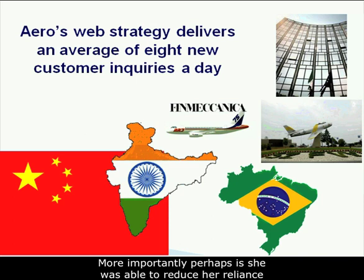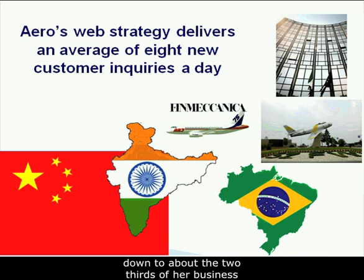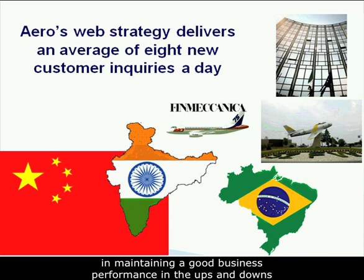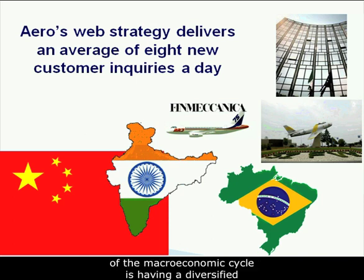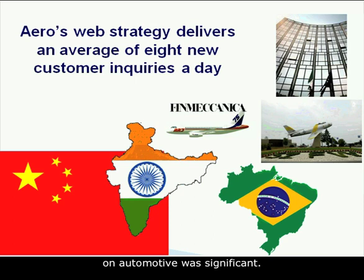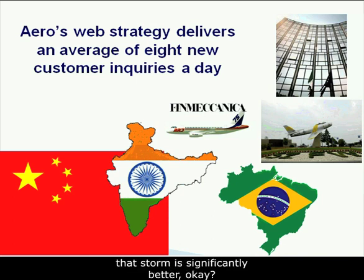More importantly, she was able to reduce her reliance on a single vertical market. She went from virtually a majority of business in defense/NASA down to about two-thirds — still somewhat heavily weighted, but this occurred over the course of just one year. One of the key elements in maintaining good business performance through the macroeconomic cycle is having a diversified business base. Companies in the Midwest that were solely reliant on automotive were significantly impacted in recent years, but those, like Nancy, who had seen the changes coming and diversified, weathered that storm significantly better — to the point that many are thriving today while many of their past competitors are exactly that: in the past.